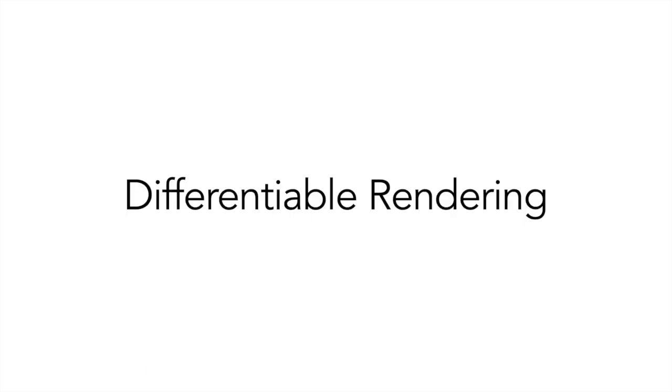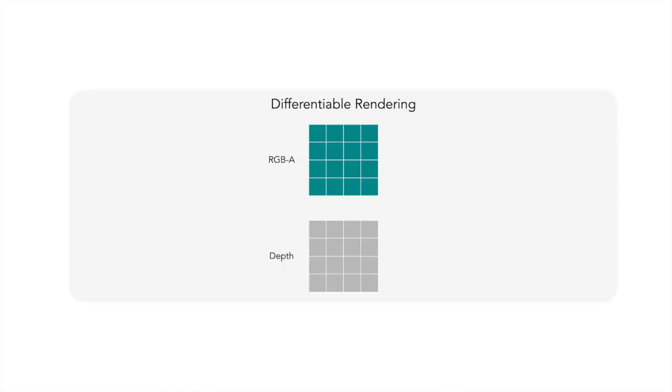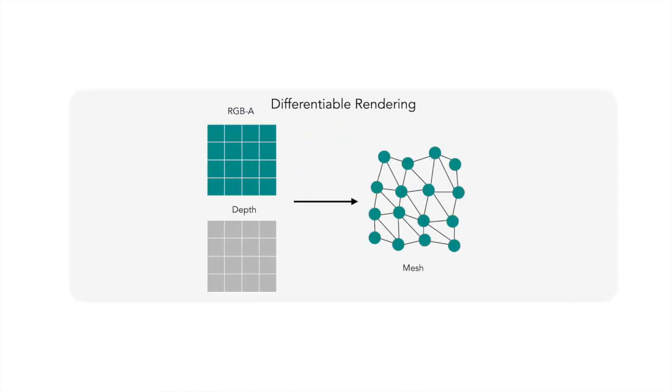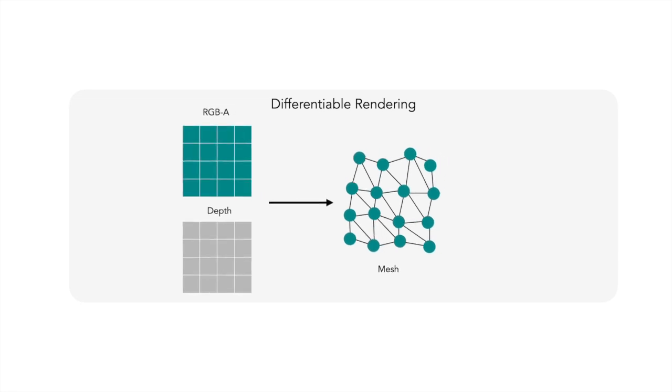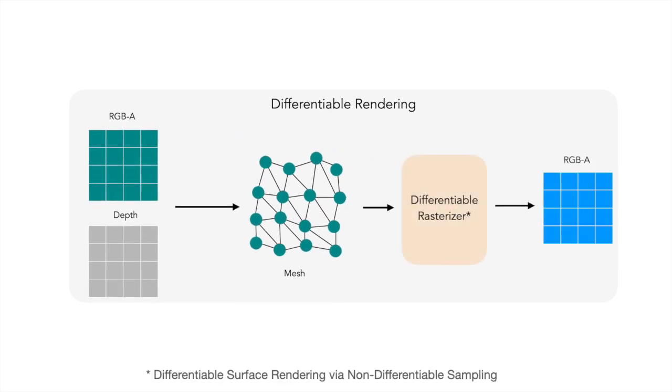Since estimating the consistency loss requires projecting from one frame to another, we need to incorporate a differentiable rendering framework. Given an RGB prediction along with the depth, we first estimate a mesh by projecting the pixel coordinates into world space, using the predicted depth values. The attributes of the mesh are set based on the RGB and alpha values for the pixels. Given this mesh, we then use a differentiable rasterizer to project the frames to target cameras.